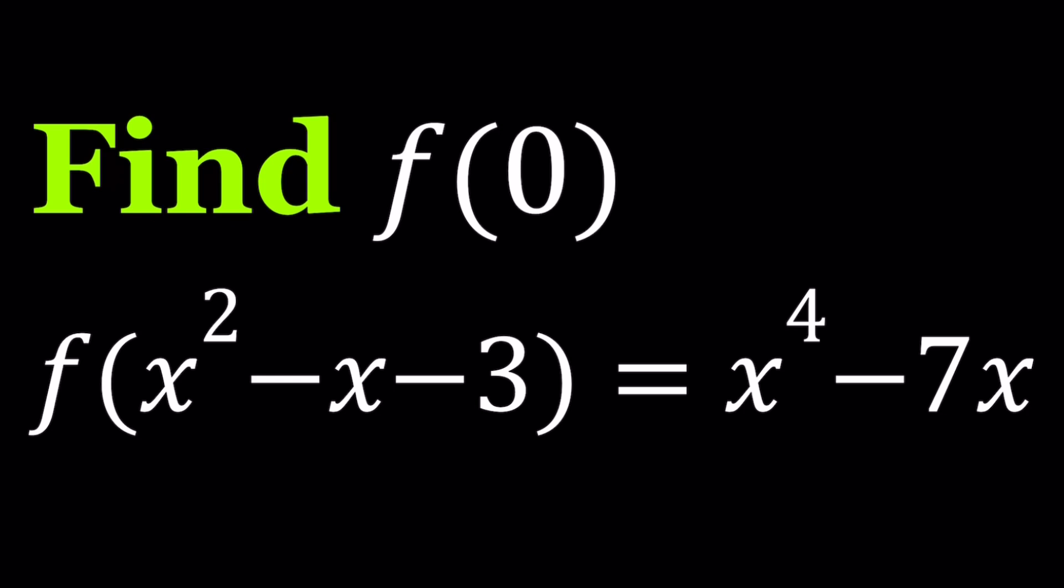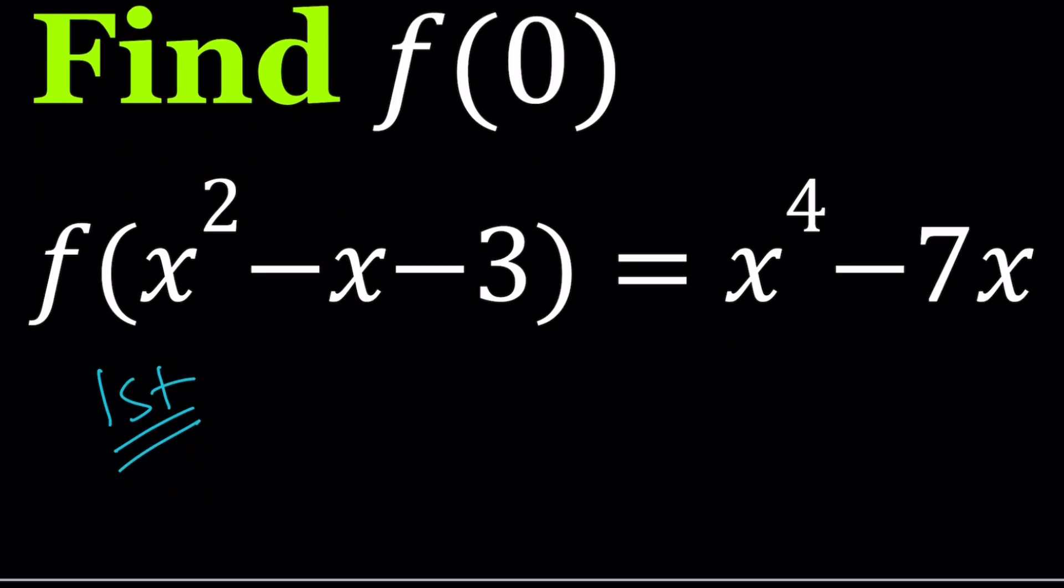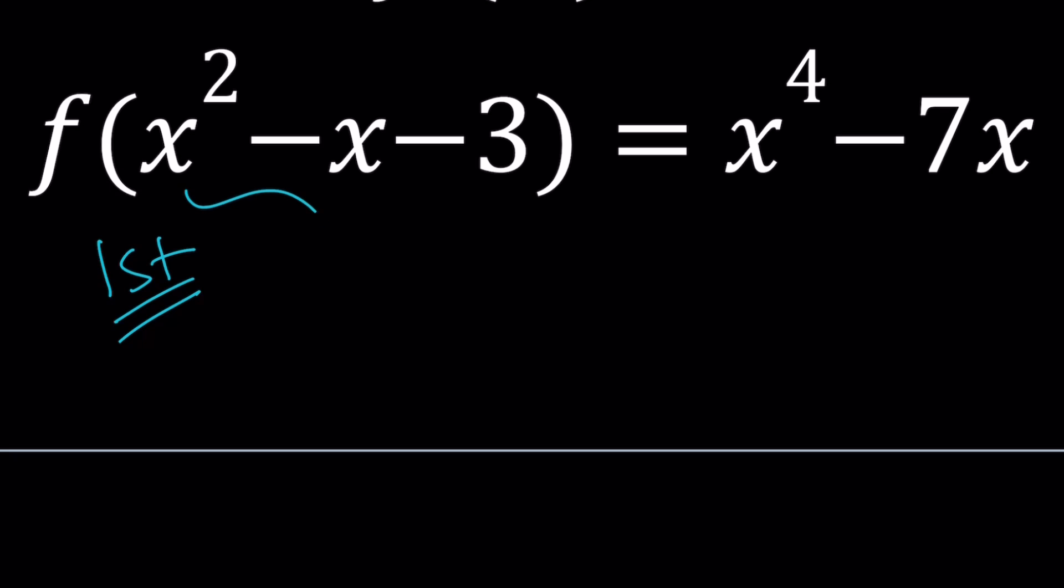First method. For the first method, since I'm being asked f of 0, it makes sense if I set this whole thing equal to 0. So let's go ahead and start by setting the input equal to 0 and then find the x value and go from there.